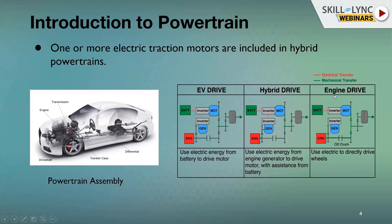In the current normal engine vehicles we see, the engine is directly driving the wheels — the battery and motor just help to start the vehicle. You can see that the green line represents the mechanical power path, showing how mechanical power is transmitted from the engine directly to the wheels.